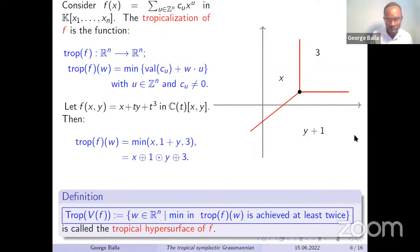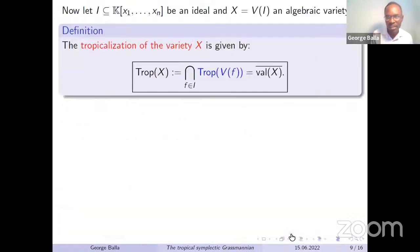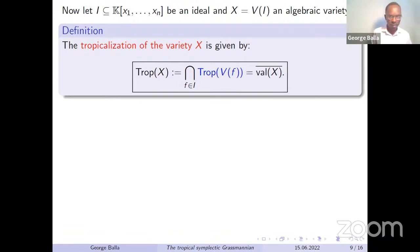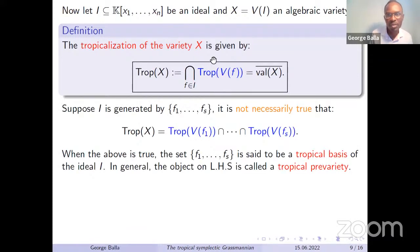Now, what is the tropicalization of a variety? When you have an ideal describing your variety, you can tropicalize your variety via this ideal by taking all the tropical hypersurfaces. This is very important: you don't do it only for generators — you have to do it for all polynomials in the ideal, meaning sums, products, all of them. You take all the tropical hypersurfaces and intersect them for all possible polynomials in the ideal, not just for the generators.